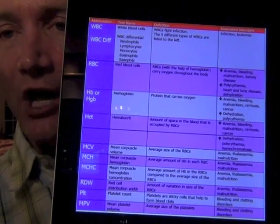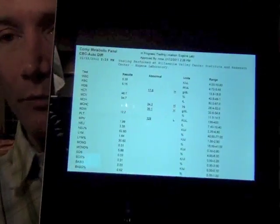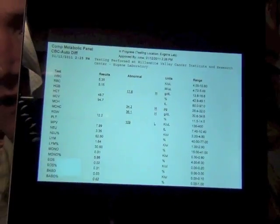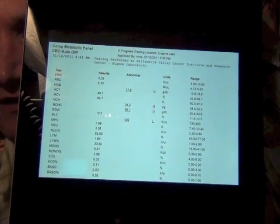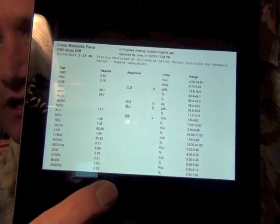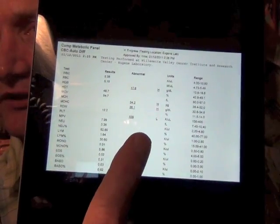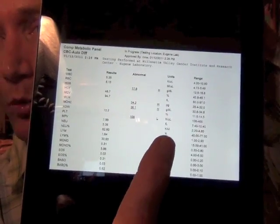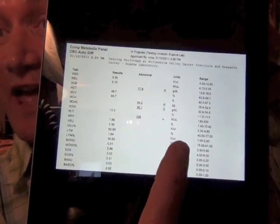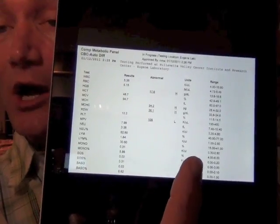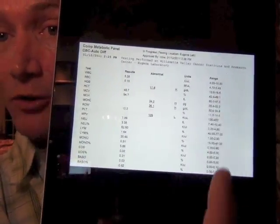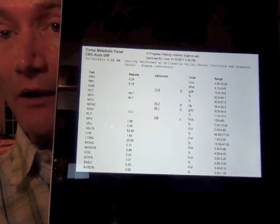So when you get your blood work, you're going to have this list of all the different tests that are done. You'll have your values listed here and then any abnormals listed in the middle. They'll have a designation of H and L, whether or not they're higher or lower than the normal range and the reference range will be on the side.